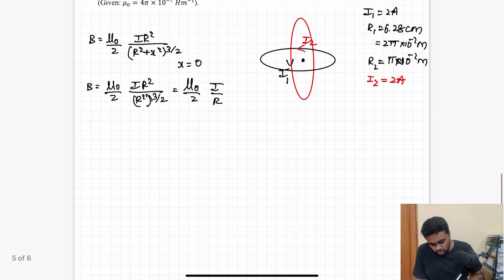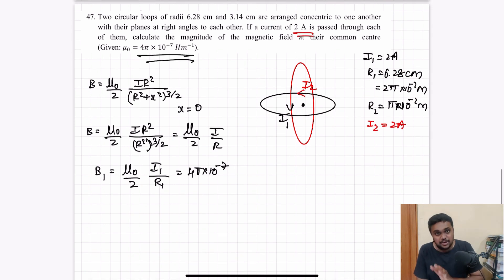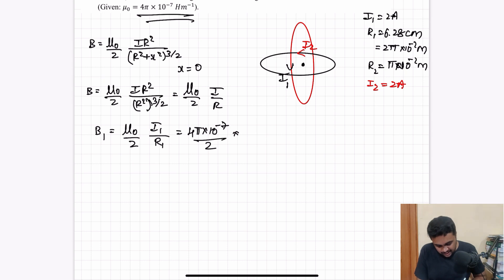The magnetic field at the center due to first loop, B1, will be equal to mu naught by 2 times I1 by R1. Mu naught is 4 pi times 10 power minus 7 divided by 2, times I1 value 2 ampere, by R1 value 2 pi times 10 power minus 2. After canceling, this gives 2 times 10 power minus 5 tesla.